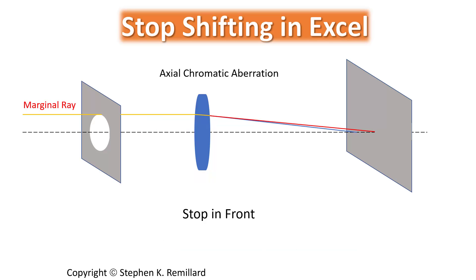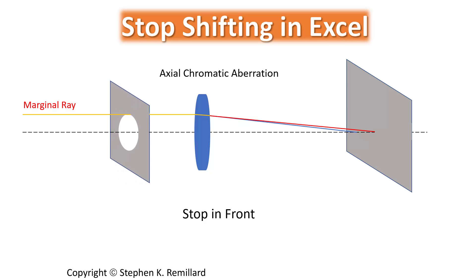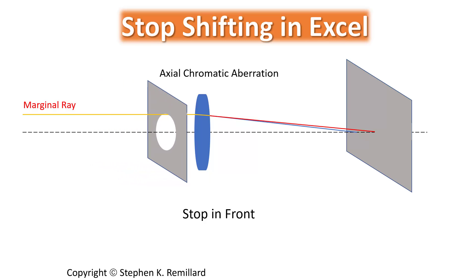Axial color, or axial chromatic aberration, arises when the marginal ray splits due to dispersion in the glass, and different color components of the ray strike the optic axis at different locations, forming the image at slightly different axial points. Moving the aperture stop has no influence on splitting of the marginal ray, so axial color is not affected by the movement of a stop.